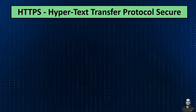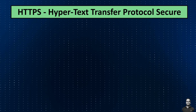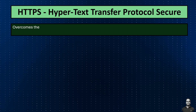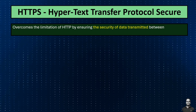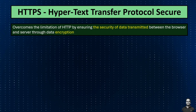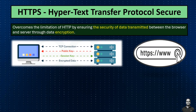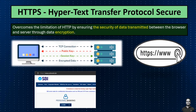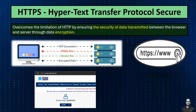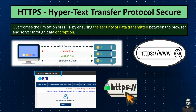Next is HTTPS — Hypertext Transfer Protocol Secure. We discussed HTTP earlier; HTTPS overcomes its limitations by ensuring the security of data transmitted between the browser and the server through data encryption. HTTPS is essentially a secure version of HTTP. For example, when you log into your banking account to make a transaction, your browser's communication with the bank server uses HTTPS, ensuring that your login credentials and financial data are encrypted during transmission.